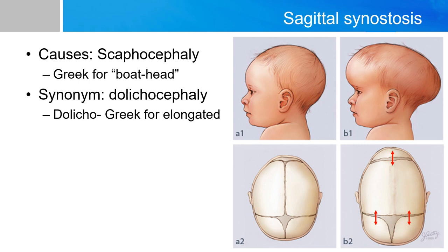When the sagittal suture is fused prematurely, as shown here, growth is restricted in the perpendicular plane, and compensatory growth will occur forward at the coronal suture and backward at the lambdoid suture, giving a prominent forehead and prominent back of the head. The head grows longitudinally and narrow like a boat, and hence this synostosis is called scaphacephaly — Greek for 'boat head.' Another name is dolicocephaly, with dolico meaning 'elongated' in Greek.